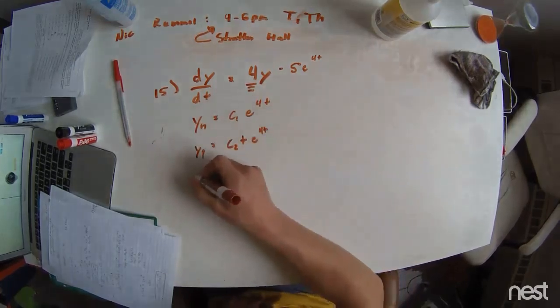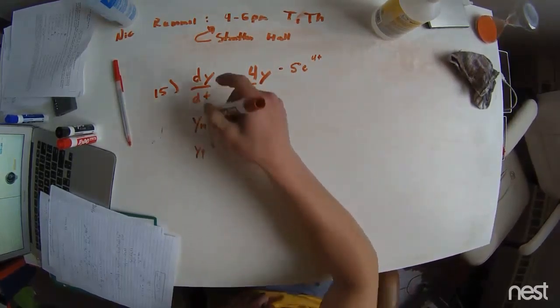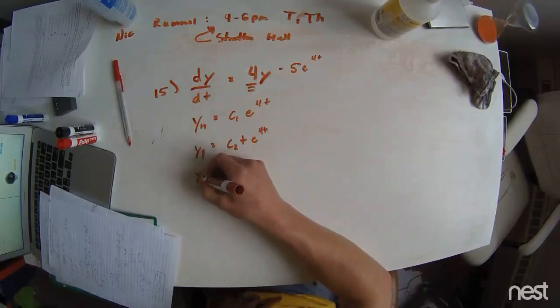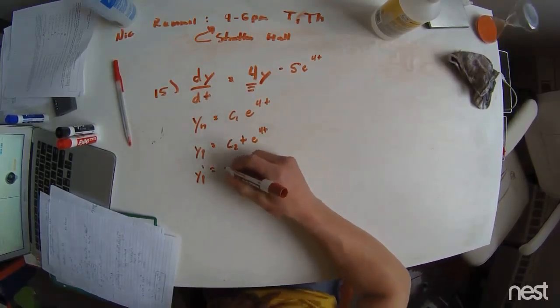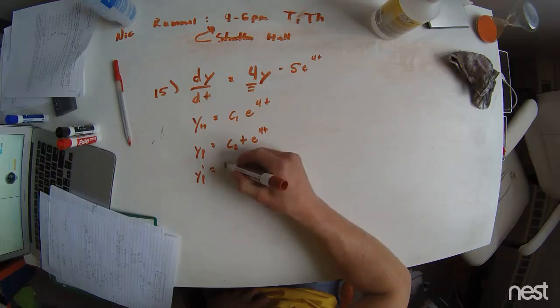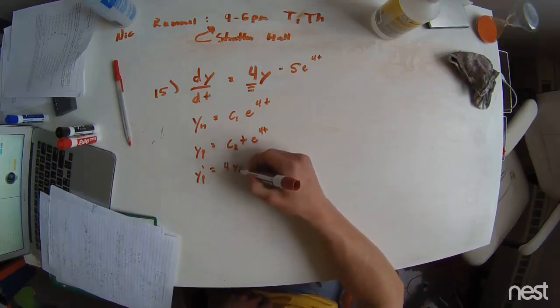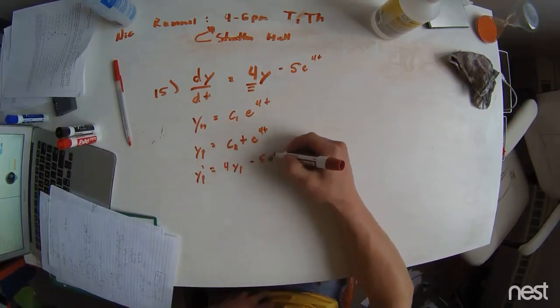So now we're going to go through the logic with y particular. We have y particular prime equals 4 times y particular minus 5e to the 4t.